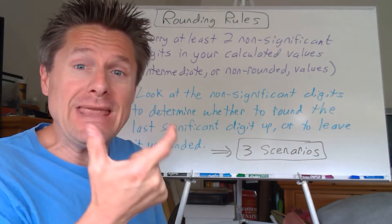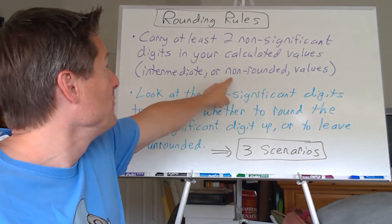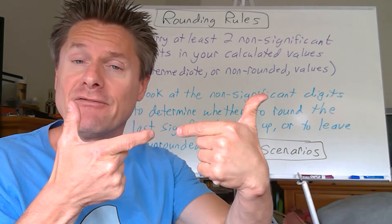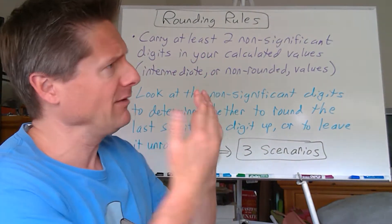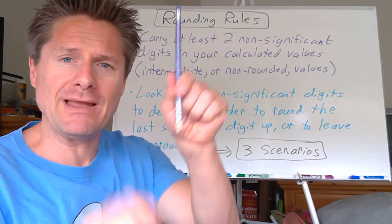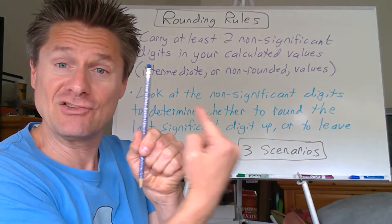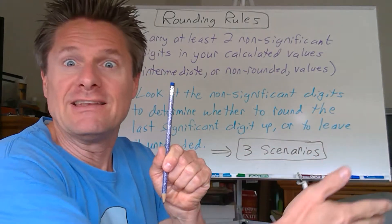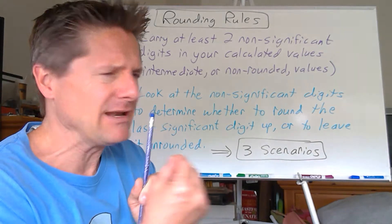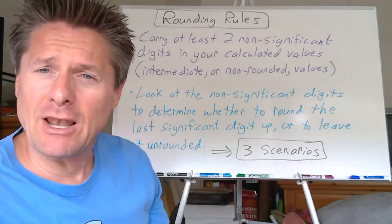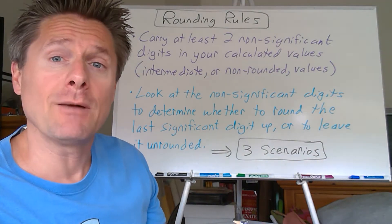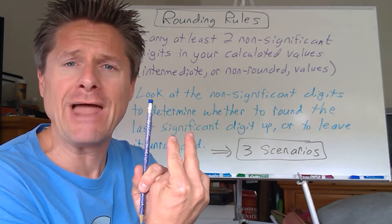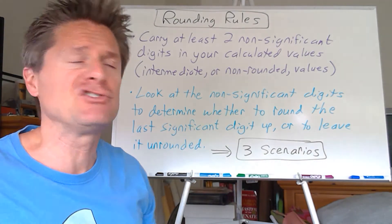We're going to take whatever our math operation is, get an intermediate or non-rounded value — you will need that. I like to use a vertical dash line to separate the significant from the non-significant digits. The significant ones are to the left, the non-significant ones to the right. Carry at least two non-significant digits past the dash line — you really don't need more than two. Writing 15 digits wastes your time, especially on a test with 20–25 problems.